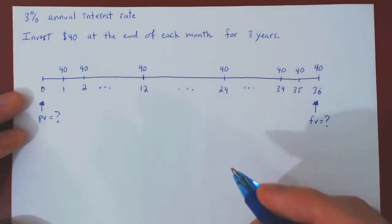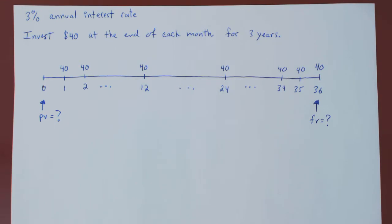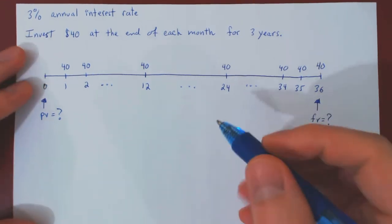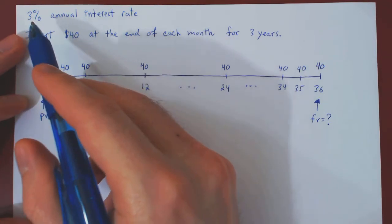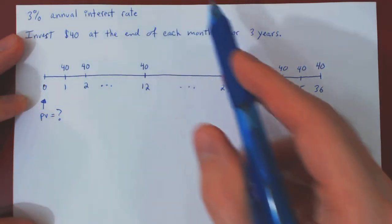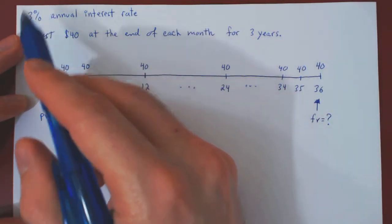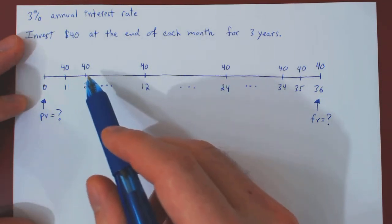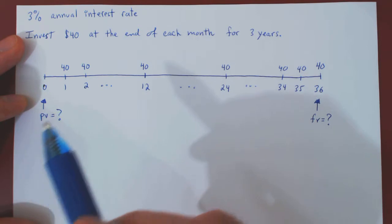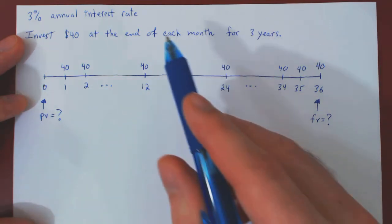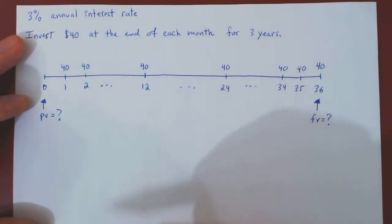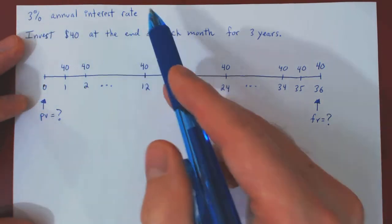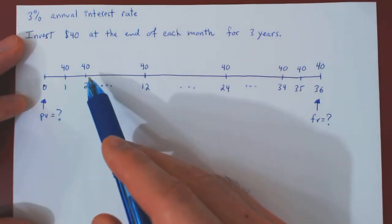The only problem — and here's where we have to be careful — the interest rate, 3%, is given as an annual interest rate. So if you move money over a period of one year, it has grown by 3%. But we will now be moving money over periods of not one year, but of one month. So we have to figure out how a 3% annual interest rate translates over a single month.